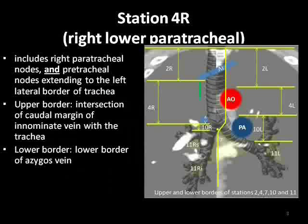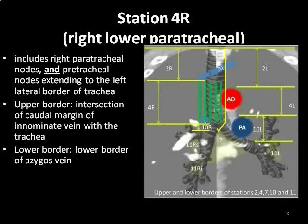The right lower paratracheal region, station 4R, includes right lower paratracheal nodes and pretracheal nodes extending to the left lateral border of the trachea.